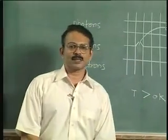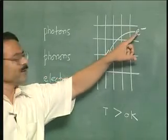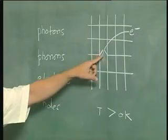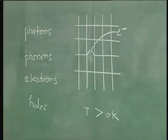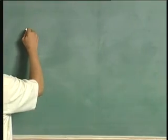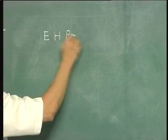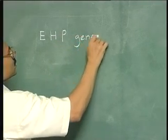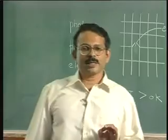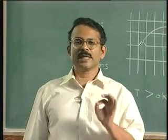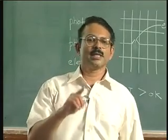For every free electron created you have a vacancy or a hole, which means electrons and holes are generated in pairs. That is why one talks of electron-hole pair generation, or EHP generation. So in an intrinsic semiconductor, electrons and holes are generated in pairs — for every free electron there is a hole.